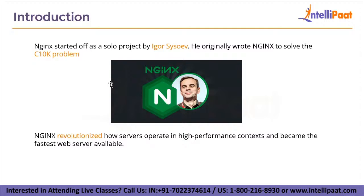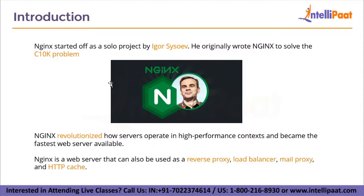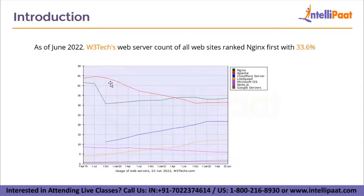Nginx is a web server that can also be used as a reverse proxy, which basically acts as a proxy server but in the opposite direction. It can also act as a load balancer, which it is mainly used for. It will also be used as a mail proxy and HTTP cache as well — you can store your data in the cache instead of the server, and this cache will be responsible for serving your traffic. And one more fact: Nginx is the most used web server right now.